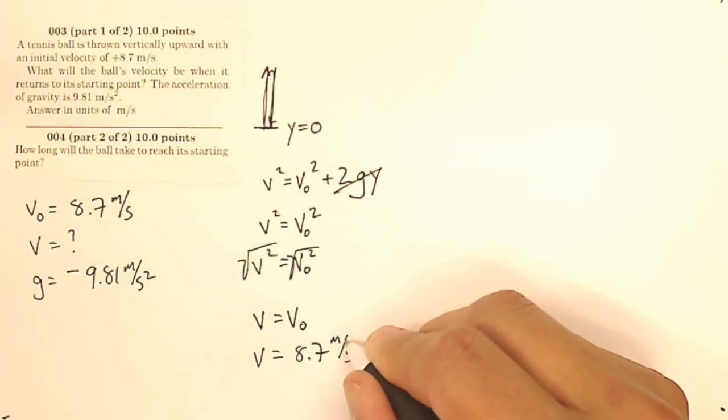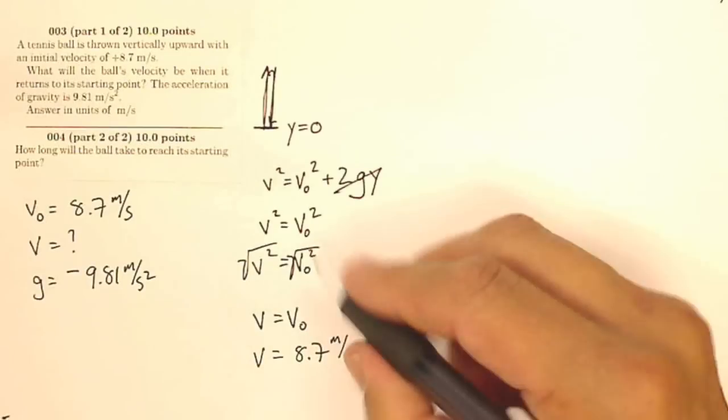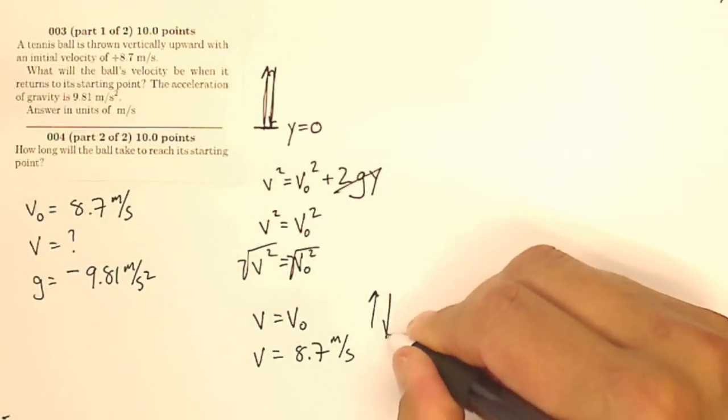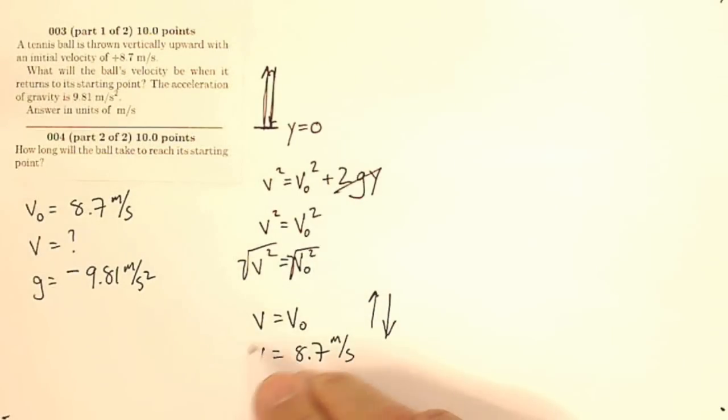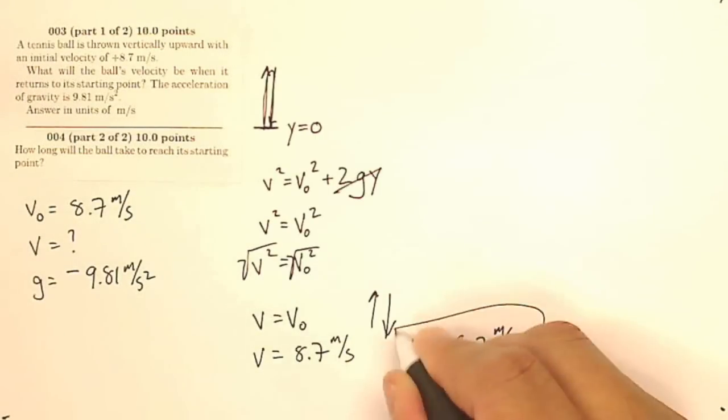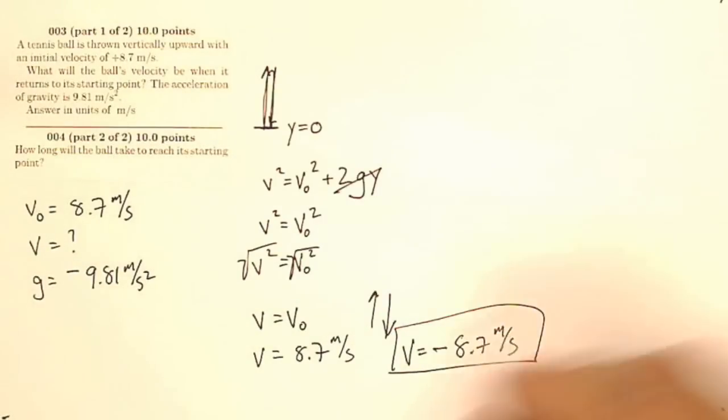If this is 8.7 meters per second, well, it started off going up, right? But it ends up going down. So I know my final velocity must be the negative of my initial velocity. So I know that my final velocity is going to be negative 8.7 meters per second. And that is very important to think about that when you've got a square root, because square roots can have negative or positive values.